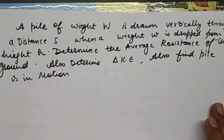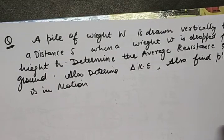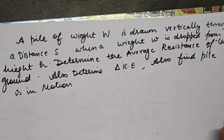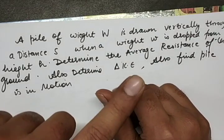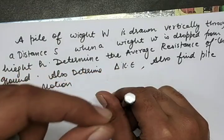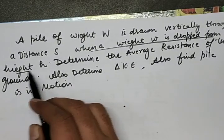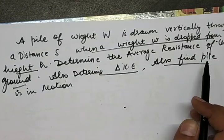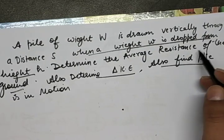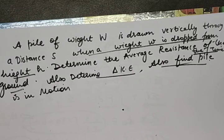Next question — this is one of the finest questions and has appeared many times in GATE exams. A pile of weight W is driven vertically through a distance s when a weight w is dropped from a height h onto it. Determine the average resistance of the ground. Also find the time for which the pile is in motion. We have a pile of weight W and a hammer of weight w dropped from height h.